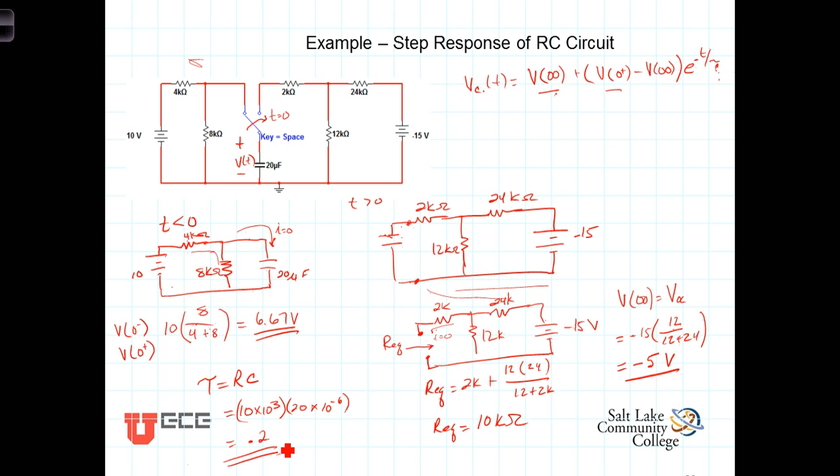we can come back up here and we can write then the voltage across the capacitor is equal to our final voltage which is minus 5 volts plus the initial voltage which is 6.67 minus the final voltage. Now let's be careful here, the final voltage is a negative 5 so it's going to be minus a minus 5 e to the minus t over 0.2.